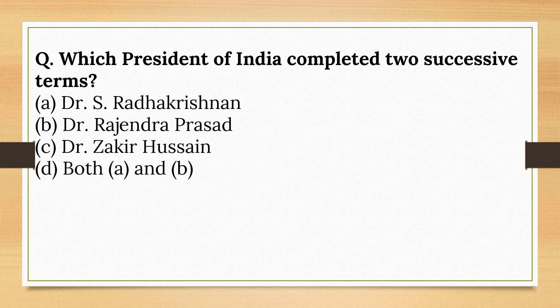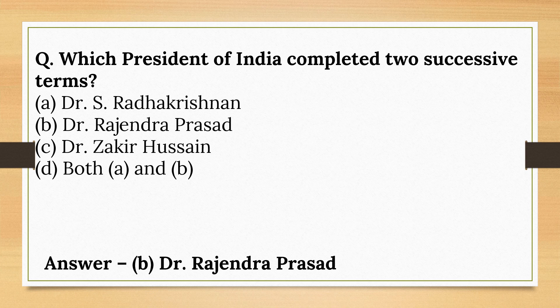Which President of India completed two successive terms? Only one President has completed two successive terms so far — Dr. Rajendra Prasad, the first President of India.